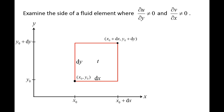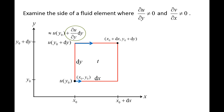Let's assume that the fluid element is in a velocity field with velocity gradients in the x and y directions. The x component of the velocity, shown with blue arrows, varies in the y direction. On the bottom side of the fluid element, the x component of the velocity is u at y0, and on the top side it is u at y0 plus dy. Since dy is very small, we can use a Taylor series approximation to rewrite the velocity on the top of the fluid element as u at y0, plus partial u partial y times dy. Notice that the difference in velocity between the top and bottom sides of the fluid element is given by partial u partial y times dy.